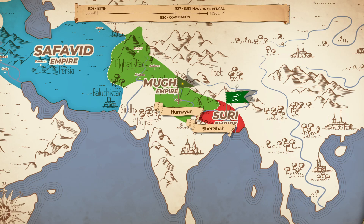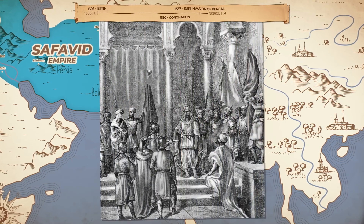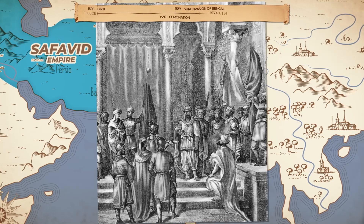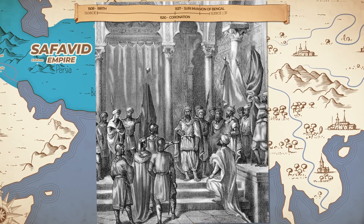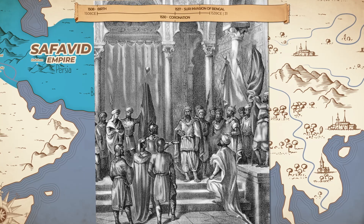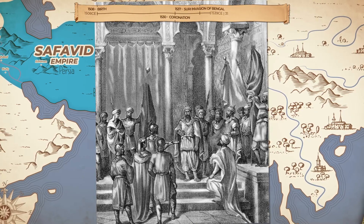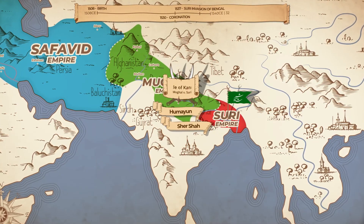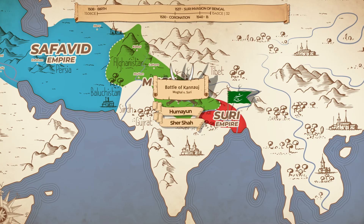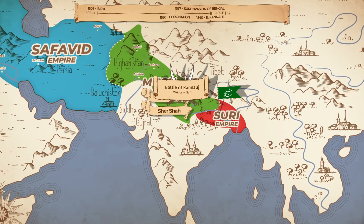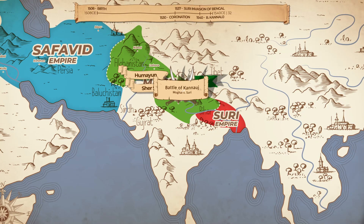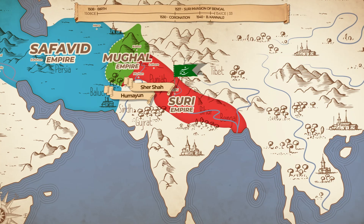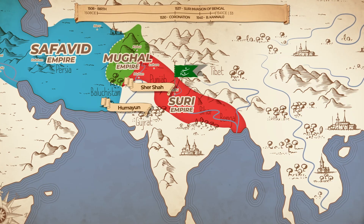Humayun was barely able to escape with his life. He regrouped in Agra, pardoned his brothers, and tried to present a united front against the Afghan threat. However, his brothers refused to cooperate. Kamran even withdrew to Lahore and raised his banners for independence. In May 1540, the Mughal and Afghan forces met at Ganaoj, where the Mughal army was defeated. Humayun withdrew to Lahore, but Sher Shah pressed on until Lahore too belonged to him. Humayun and his brother Hindal were left without land to rule, while Kamran and Askari still held some holdings in Afghanistan.